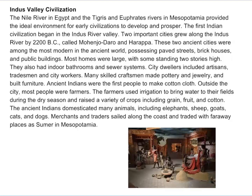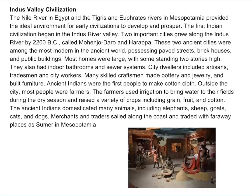Many skilled craftsmen made pottery and jewelry and built furniture. Ancient Indians were the first people to make cotton cloth. Outside the city, most people were farmers. The farmers used irrigation to bring water to their fields during the dry season and raised a variety of crops, including grain, fruit, and cotton. The ancient Indians domesticated many animals, including elephants, sheep, goats, cats, and dogs. Merchants and traders sailed along the east coast and traded with faraway places such as Sumer and Mesopotamia.